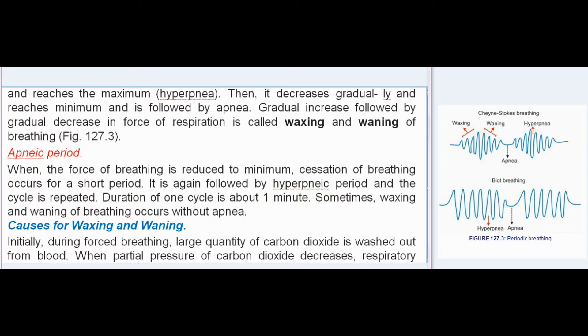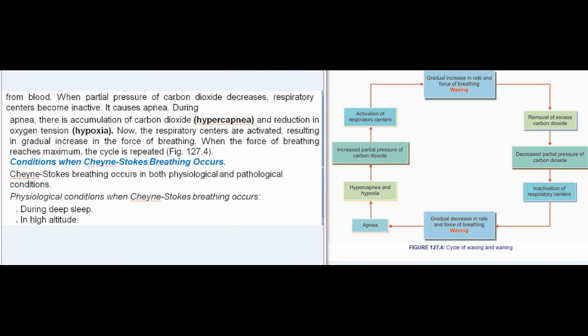When the force of breathing is reduced to minimum, cessation of breathing occurs for a short period (apneic period), again followed by the hyperpneic period, and the cycle is repeated. Sometimes, waxing and waning occur without apnea. The mechanism: during forced breathing, large quantities of carbon dioxide are washed out; when PCO2 decreases, respiratory centers become inactive, causing apnea. During apnea, carbon dioxide accumulates (hypercapnia) and oxygen tension falls (hypoxia), activating the respiratory centers, resulting in gradual increase in force of breathing until maximum is reached and the cycle repeats.